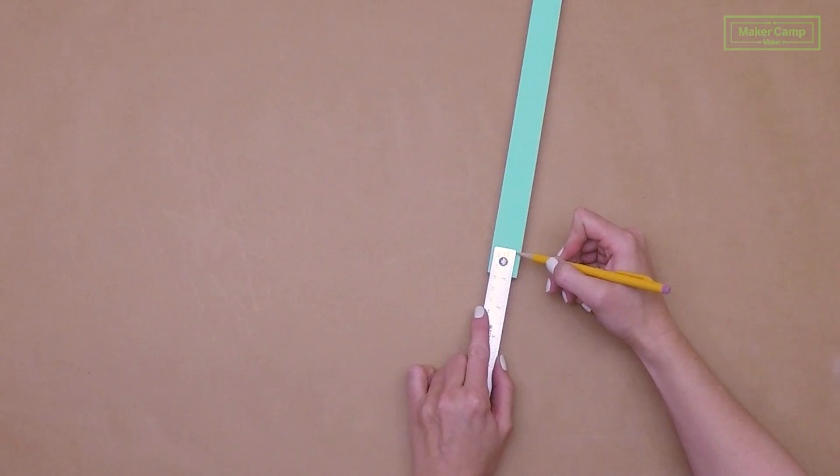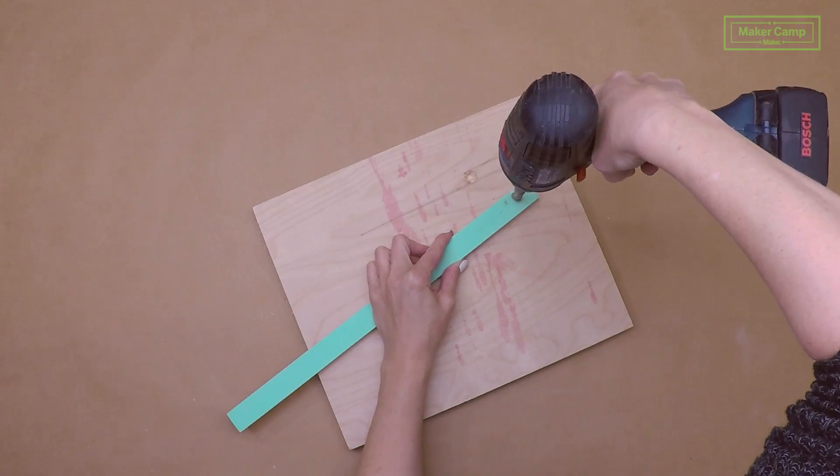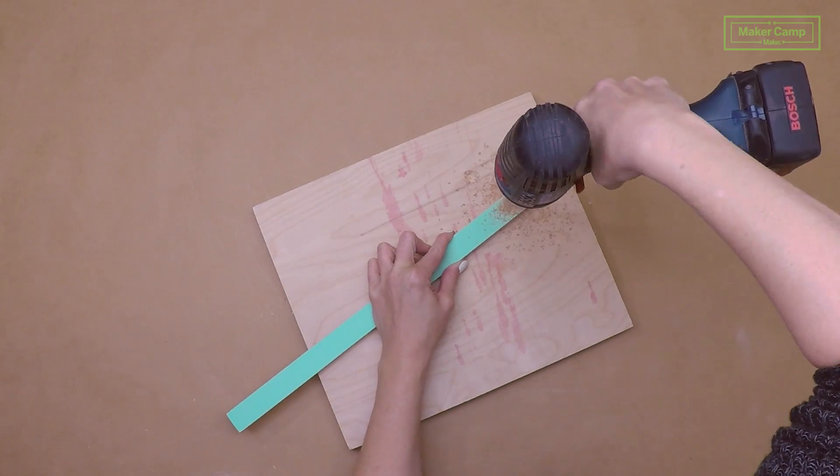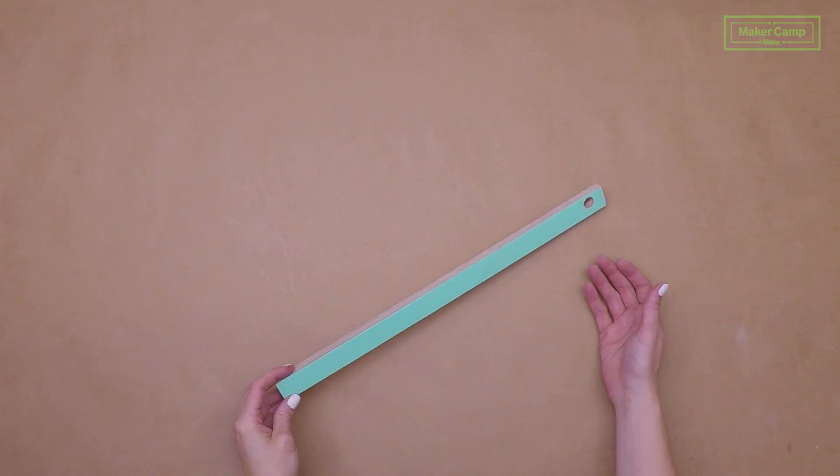Next, we're going to drill our trigger hole for our ball shooter. Measure five-eighths up and one-eighths inch from the bottom. Use the half-inch bit to drill your hole.